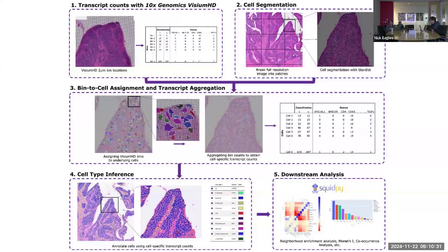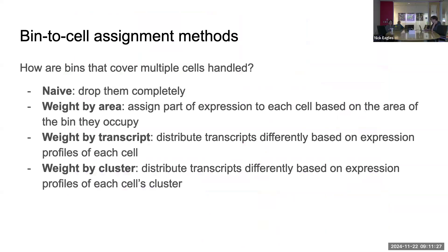The pipeline also provides wrappers for cell type inference — trying to determine what cell type each cell is — with a few different tool options. Once you have that, there's a lot of downstream analysis you can do. This is a Python-based tool, so they naturally discuss using Squidpy, though you could also bring the data into R and use Bioconductor packages.